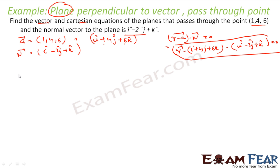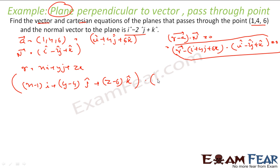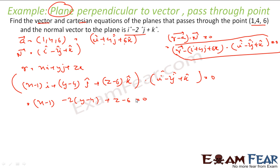For the Cartesian form, replace r with x·i + y·j + z·k. Substituting, (r − a) becomes (x−1)·i + (y−4)·j + (z−6)·k, and the dot product with (i − 2j + k) equals 0. Solving: 1·(x−1) − 2·(y−4) + 1·(z−6) = 0, which gives x − 2y + z + 1 = 0.